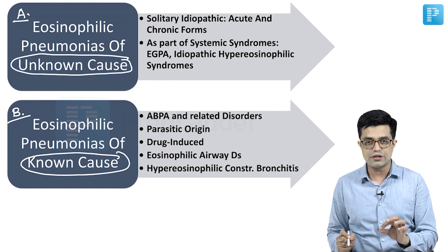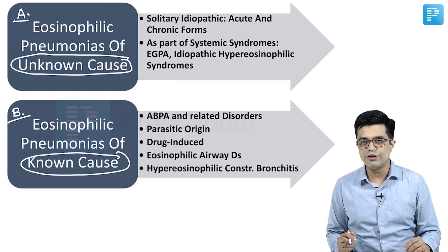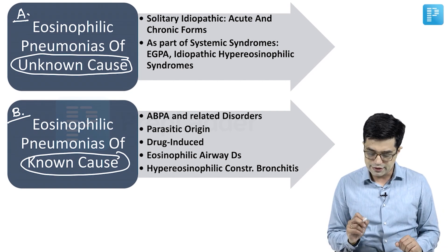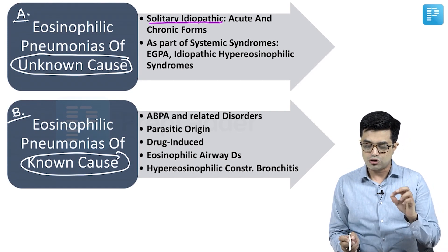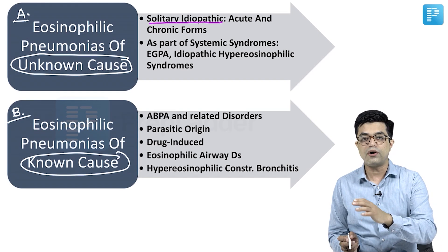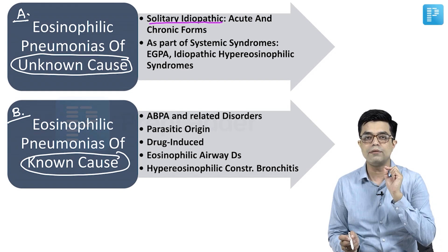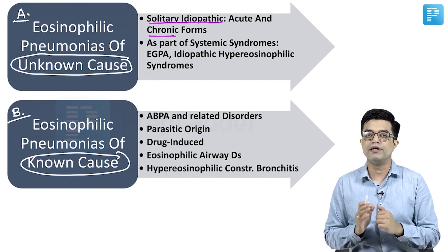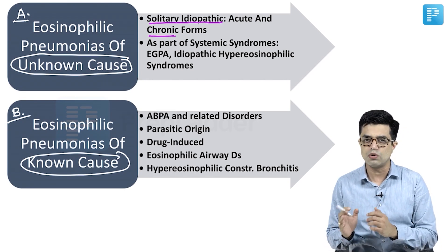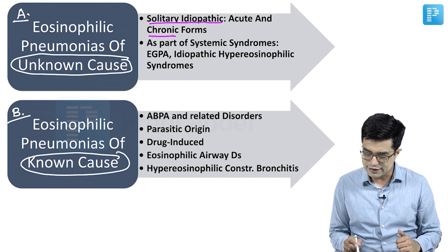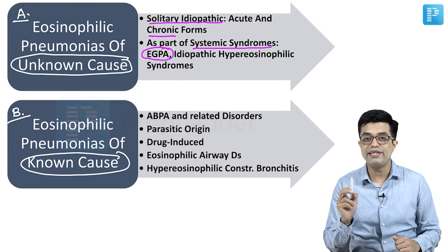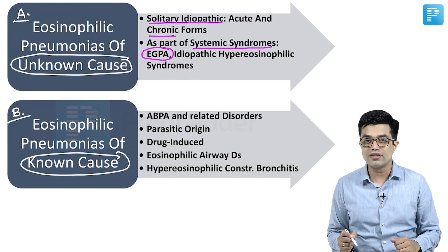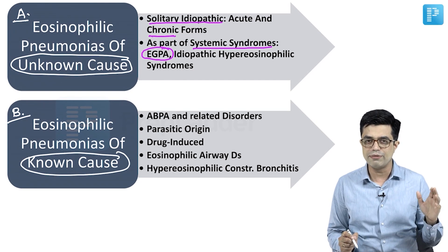I have only written the important conditions here, as there is a huge list and many conditions are not even seen in children. Eosinophilic pneumonias of unknown cause includes the solitary idiopathic forms: acute eosinophilic pneumonia and chronic idiopathic eosinophilic pneumonia — so we have both acute and chronic forms. Then we have eosinophilic pneumonias as part of systemic syndromes; one example is EGPA, which stands for eosinophilic granulomatosis with polyangiitis. The older name for this was Churg-Strauss syndrome.